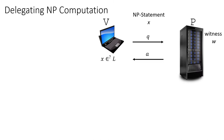Let's start by talking about delegating NP computation. This is the setting where we have a verifier, which is usually computationally weak, and it wants to learn whether some NP statement X is valid, whether X belongs to some NP language L. It wants to use the computational power of a powerful prover or server, which has the witness for this NP language. The obvious way is for the prover to simply send the witness to the verifier, but we want to do it with fewer resources in terms of communication and computation complexity for the verifier.